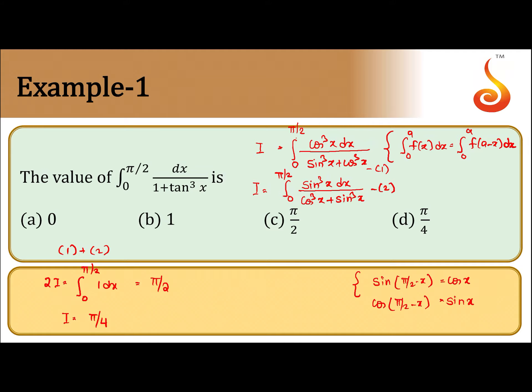We change this given integral into sin and cos, and both are the same, I and I. If we add equation 1 and 2, we get integral from 0 to pi by 2 of 1 dx, and I is equal to pi by 4.